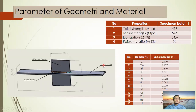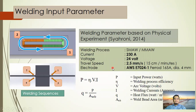The geometry parameters include the main plate and the stiffener plate as the specimen. The mechanical properties are 430 MPa yield strength and 446 MPa tensile strength, along with the chemical composition of the steel. The welding input parameters are based on the physical experiment by Sahroni: SMAW process, current of 230 ampere, and voltage of 24 volts. From the current and voltage, we calculate the power input and then the heat flux, which serves as input data for the simulation.